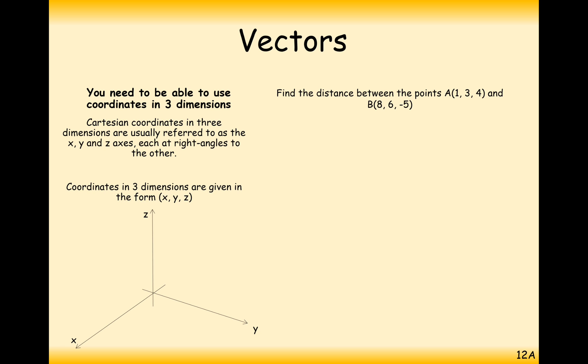Find the distance between two coordinates in three dimensions now. We've got one coordinate at 1, 3, 4, and another coordinate at 8, 6, minus 5. The first thing for us to do is to work out how we get from A to B, and the classic way of doing that is to calculate the coordinate for B minus the coordinate for A. So B coordinate take away A coordinate, and we get 7, 3, minus 9.